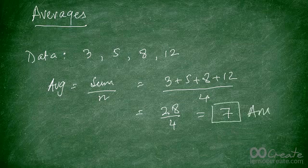So the answer is 7. Whenever you want to figure out the average of a group of data, all you need to do is add up all the values and divide by the number of terms.